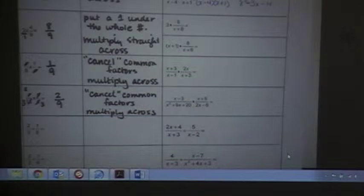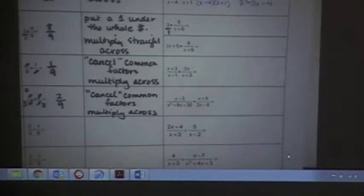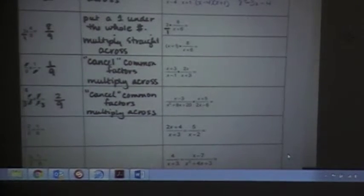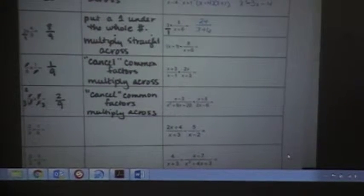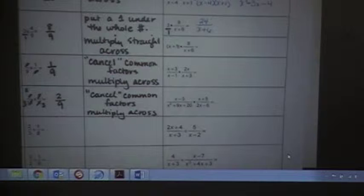Everybody okay? All right. Number 2. Put a 1 under the whole number. So, just the rule is the same. So, I'm going to put a 1 under this 3. And multiply straight across. So, 3 times 8 is 24. 1 times anything is itself. So, that is it. Can I simplify that 24 and that 6? No. No. Because the grouping bar of the fraction, the fraction bar is a grouping symbol. And it's not just a 6. It's x plus 6. And so, it can't be canceled or simplified with anything.